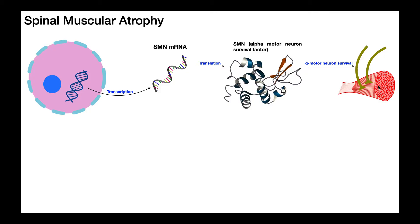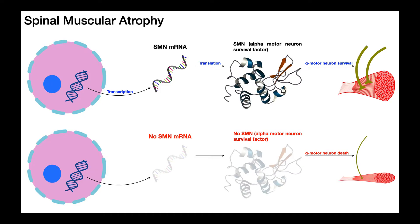Specifically in spinal muscular atrophy, the SMN gene within the DNA is deleted. Individuals with spinal muscular atrophy don't have this gene. So if they don't have the gene for SMN, they're not going to be able to produce the mRNA — no transcription of that gene, and therefore no translation to get the SMN protein. Without the SMN protein, they are not able to promote alpha motor neuron survival, resulting in progressive alpha motor neuron death.